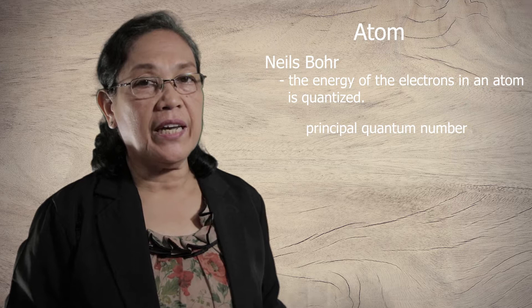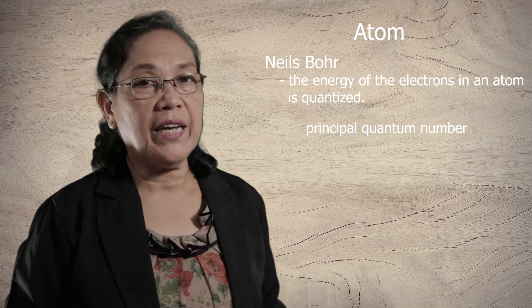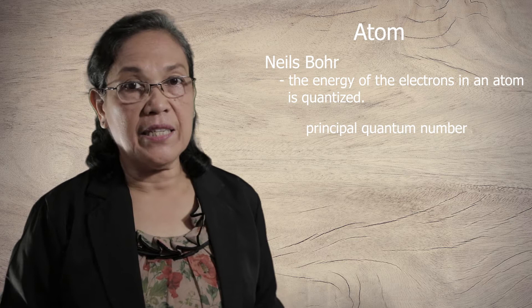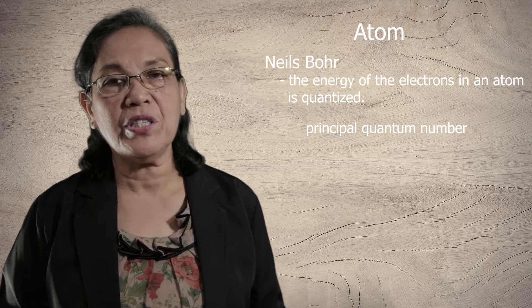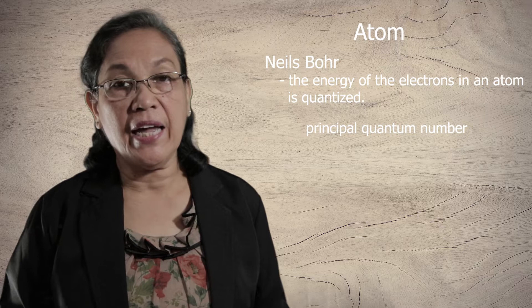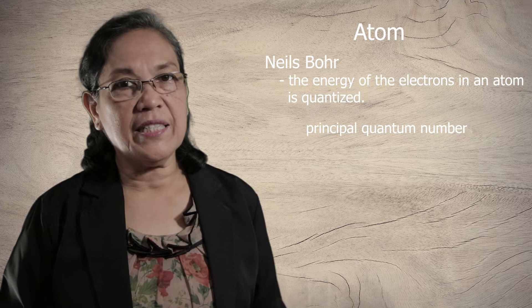Each energy level is composed of sublevels. For the first energy level, we have the S sublevel. In the second energy level, there are two sublevels: S and P. In the third energy level, there are three sublevels: S, P, and D. And in the fourth energy level, we have S, P, D, and F.